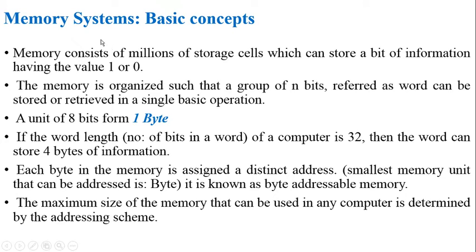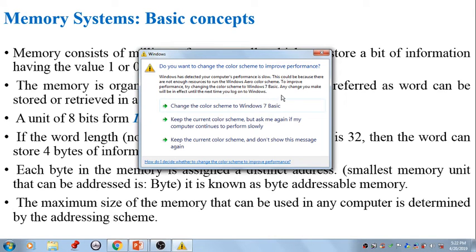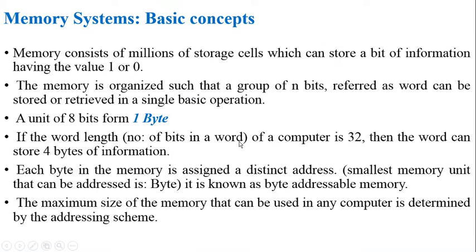Memory consists of millions of storage cells, each of which can store a single bit of information — either a 1 or a 0. These storage cells are made up of semiconductor cells.